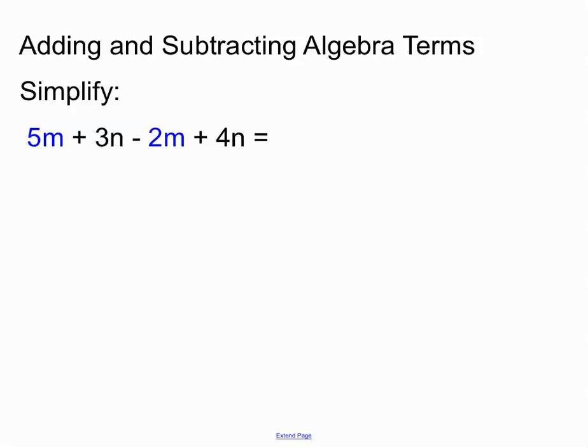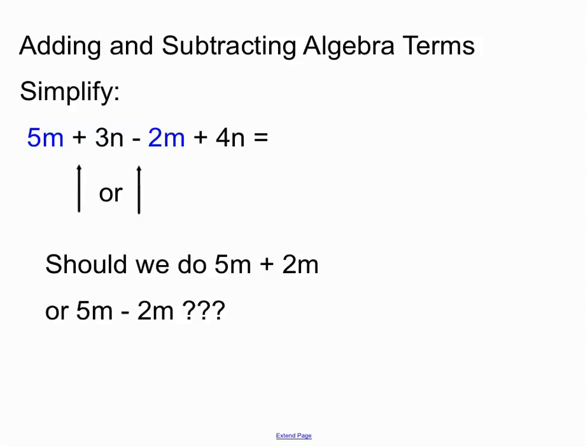So here we have 2m terms, and we have a 5m and a 2m, but we have different plus and minus signs around here. So we have to decide whether we take notice of this plus sign here or this minus sign just in front of the 2m. So one way I like to have my students respond to that, to answer the question should we do 5m plus 2m or 5m minus 2m, is to put a box around each of the terms.